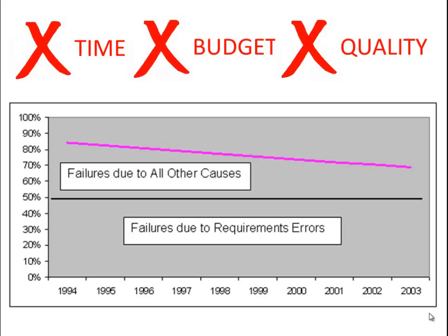Nevertheless, we would assume that somehow we would have figured out how to improve our success rates in the past 50 years. If you look at the failure rate from 1994 to 2003, we appear to be improving. But it doesn't seem like we have gotten past the 30% success rate, and 70% of projects still appear to be in trouble.